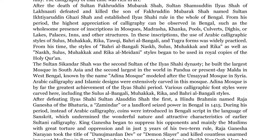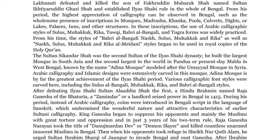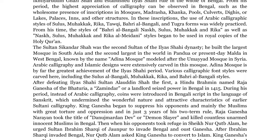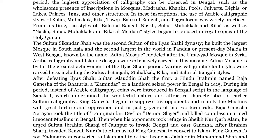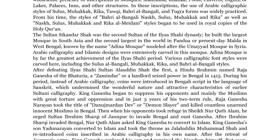Various calligraphic font styles were carved in Adina Mosque, including the Sulus al-Bangali, Mahakik, Rekha, and Bari al-Bangali styles. After defeating Ilyas Shahi Sultan Alaruddin Shah I, a Hindu Brahmin named Raja Ganesha of the Batchuria, a landlord, seized power in Bengal in 1415. During his period, instead of Arabic calligraphy, coins were introduced in Bengali script in the language of Sanskrit, which undermined the wonderful nature and attractive characteristics of earlier sultani calligraphy.